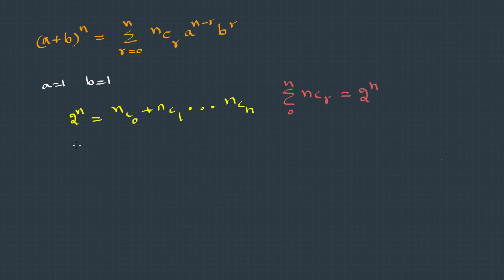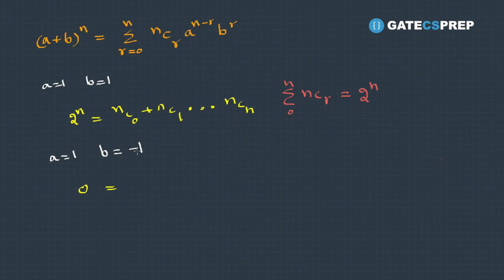On the same lines, if we take a = 1 and b = -1, the left-hand side becomes 0. On the right-hand side, because of -1, alternating terms become negative. So we get: nC0 - nC1 + nC2 - ... = 0, meaning the alternating sum of binomial coefficients equals zero.